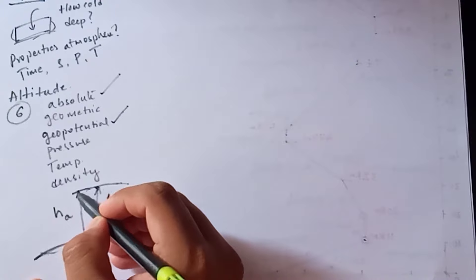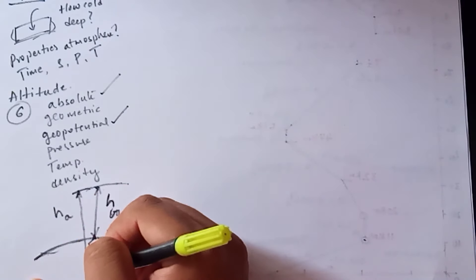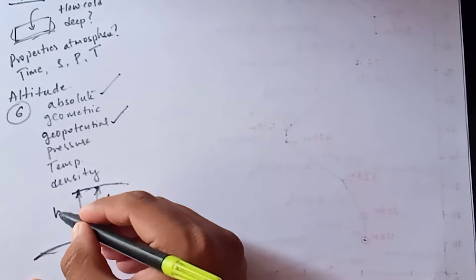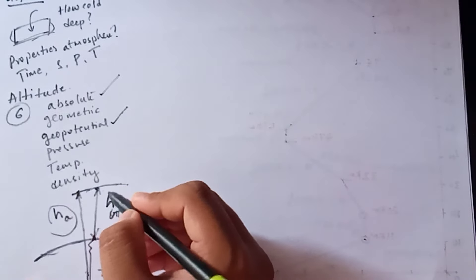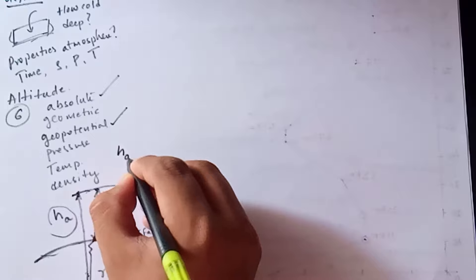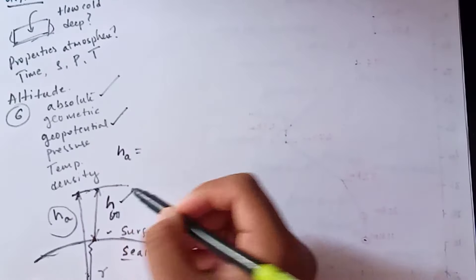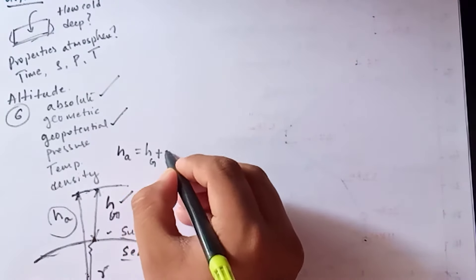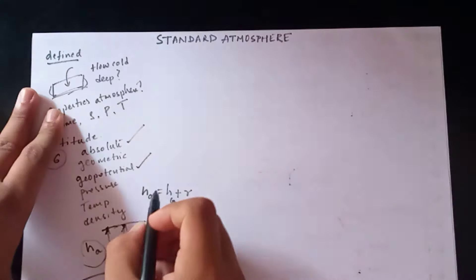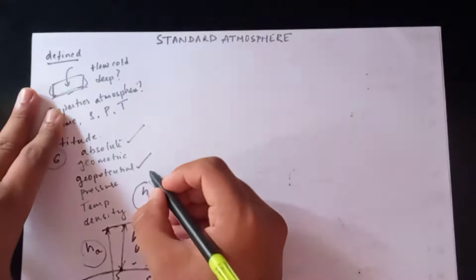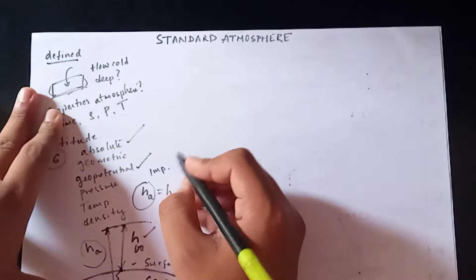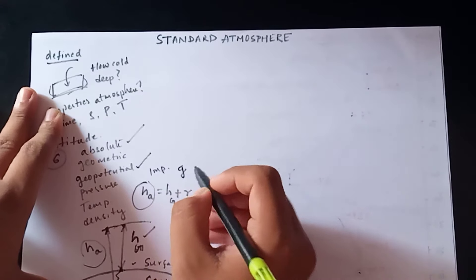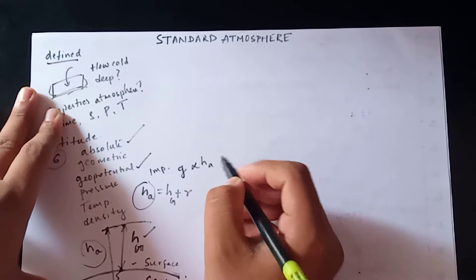If we bore a hole through the ground to the centre of the earth and measure from the top to the centre of the earth, that is called absolute altitude. Absolute altitude equals geometric altitude plus the radius of the earth. This is very important especially for space flights, because the local acceleration due to gravity g varies with absolute altitude.